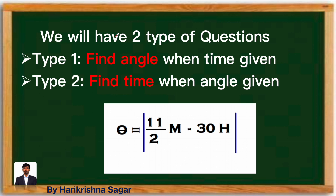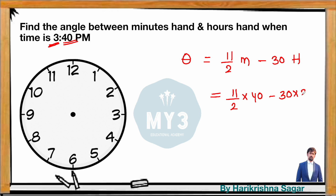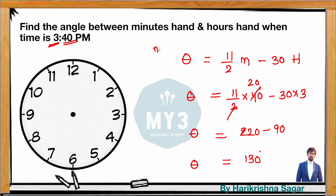We can also use the formula approach: θ = |11/2 × m − 30h|. For 3:40, substituting m = 40 and h = 3: 11/2 × 40 = 220, minus 30 × 3 = 90, giving 220 − 90 = 130 degrees. Both methods give the same result.